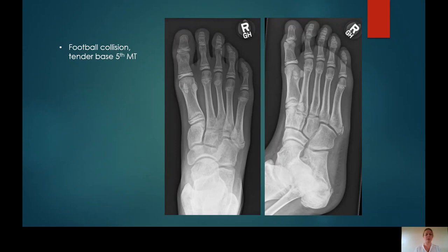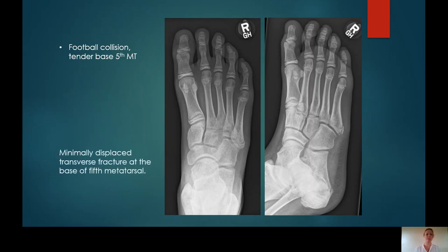Case 7: Football collision, tender base of fifth metatarsal. This x-ray is a little harder in that they have a base of fifth apophysis — this is a normal base of fifth apophysis with a longitudinal line. However, there is also a transverse line at the base of fifth metatarsal. So: normal base of fifth apophysis, but there is a transverse fracture also extending through that base of fifth metatarsal.